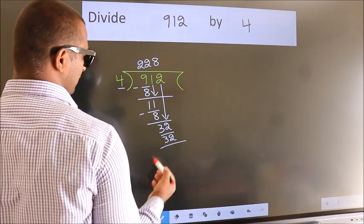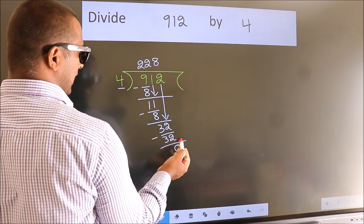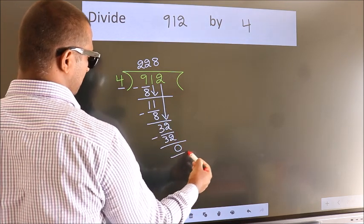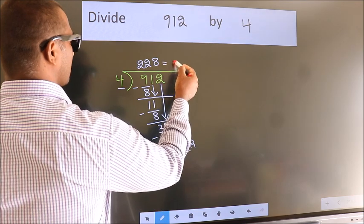Now, we subtract. We get 0. No more numbers to bring down. So, we stop here. This is our remainder. This is our quotient.